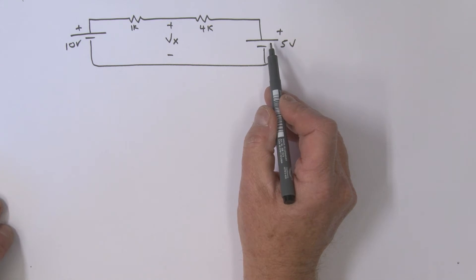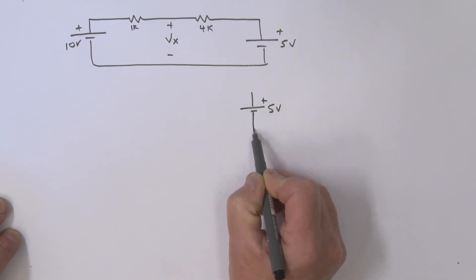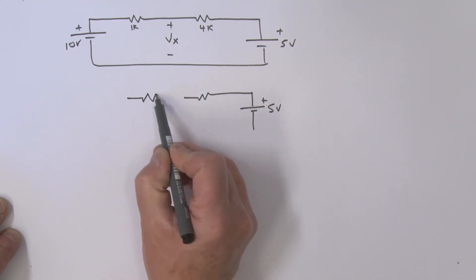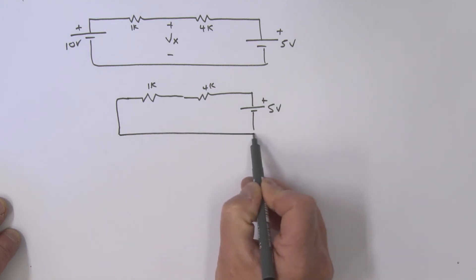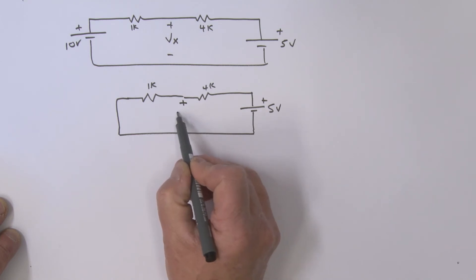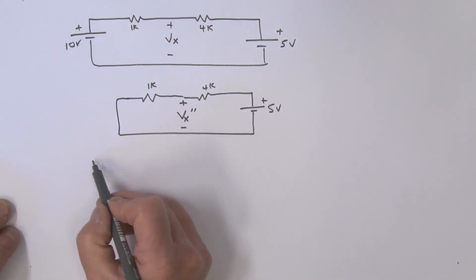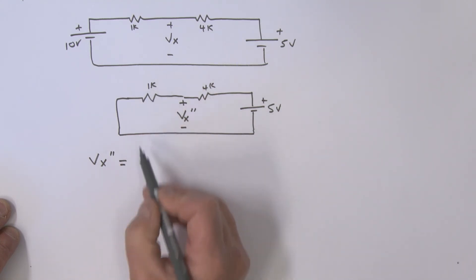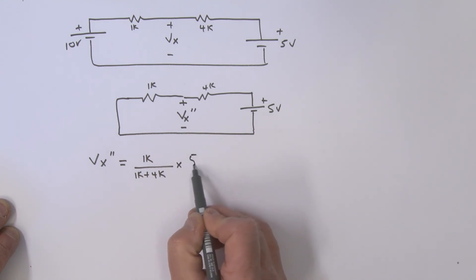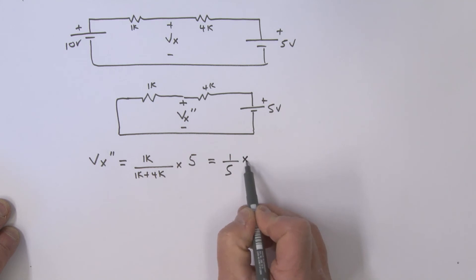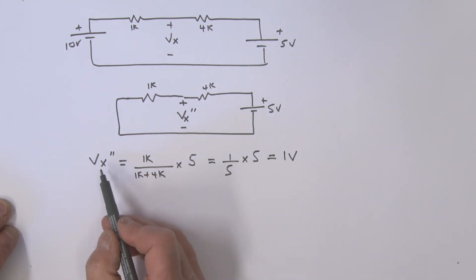Now let's look at the 5V source acting on its own, zeroing the 10V source. The circuit is: 5V source, 4kΩ, and 1kΩ — the 10V is shorted. We're looking at the voltage across the 1kΩ, which we'll call Vx double prime. Using the voltage divider: Vx'' = (1k / (1k + 4k)) × 5 = (1/5) × 5 = 1 volt.